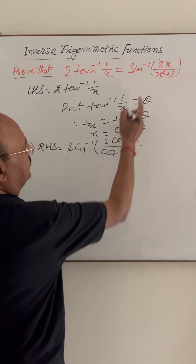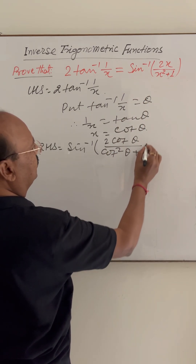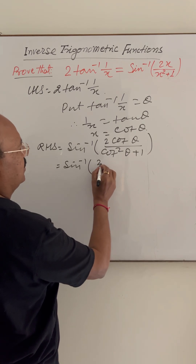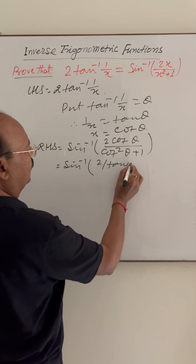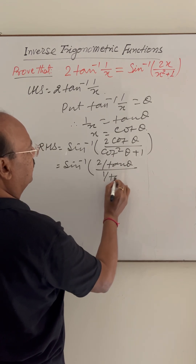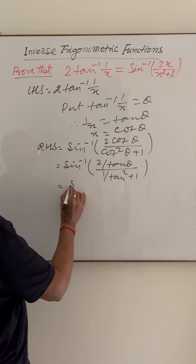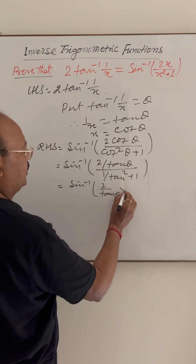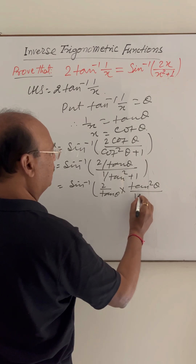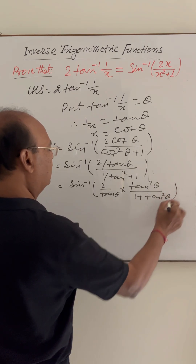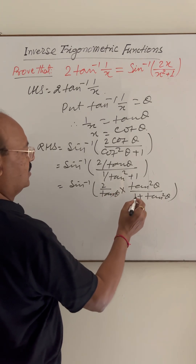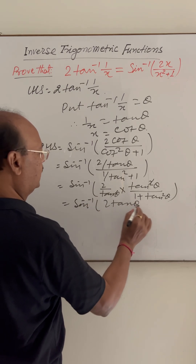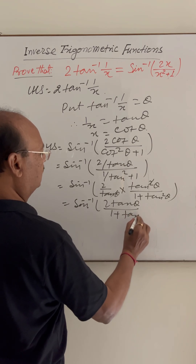So this becomes sin inverse of 2 cot theta upon cot square theta plus 1. And this is equal to sin inverse of 2 by tan theta in the numerator, and 1 by tan square theta plus 1 in the denominator. This simplifies to sin inverse of 2 by tan theta into tan square theta by 1 plus tan square theta. Here tan theta cancels, giving sin inverse of 2 tan theta upon 1 plus tan square theta.